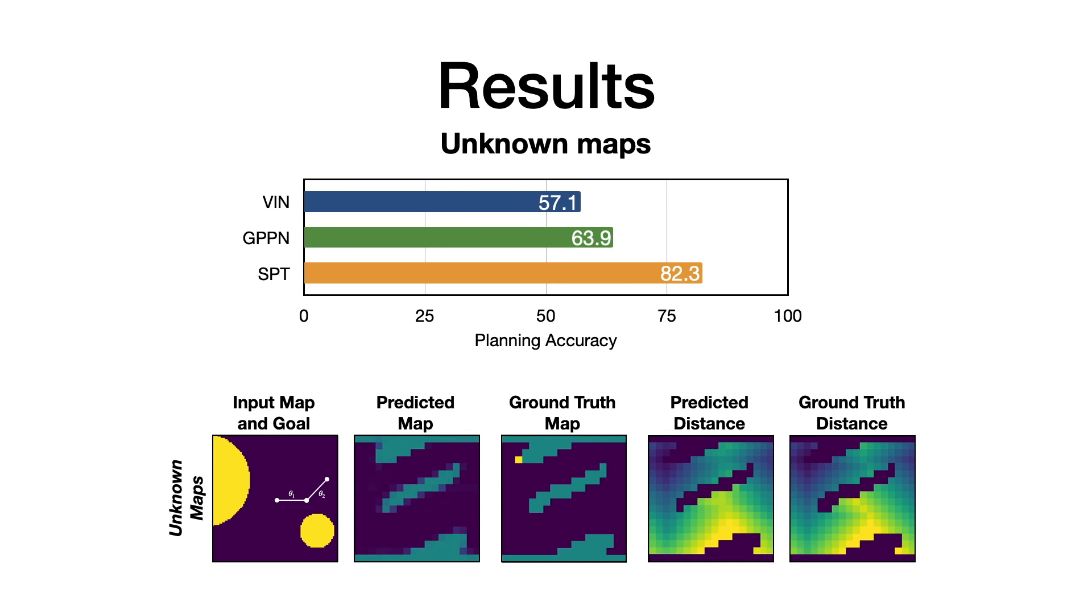In the bottom, we show an example of predicted map and distance values using the SPT model, which shows that the SPT model is able to predict the map accurately without having any map supervision.